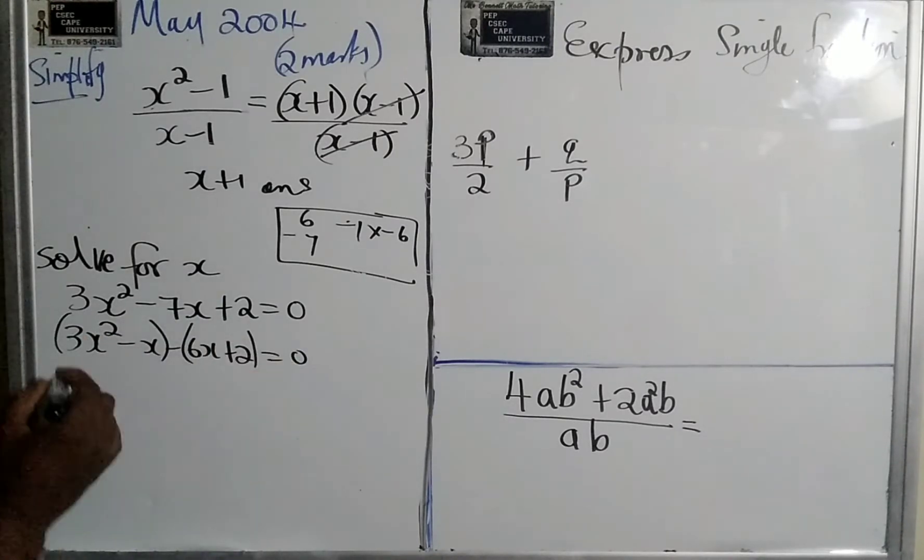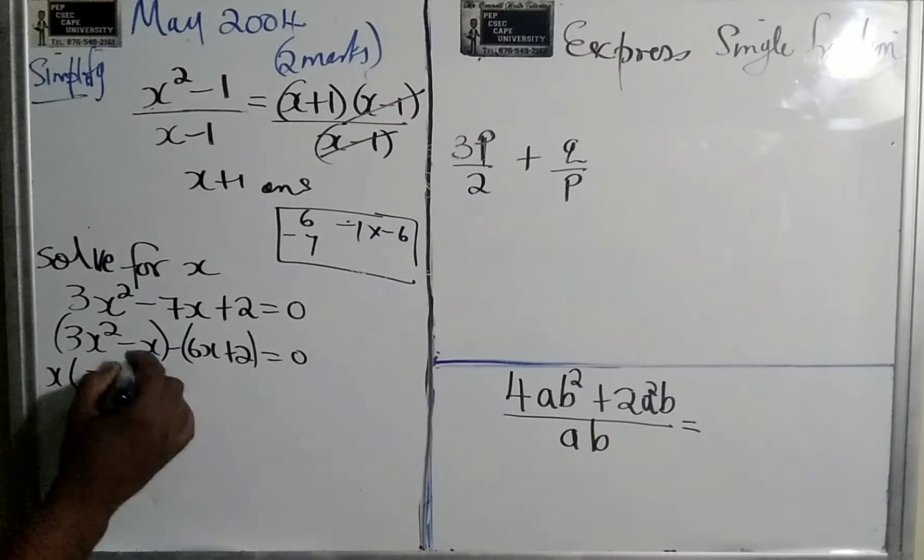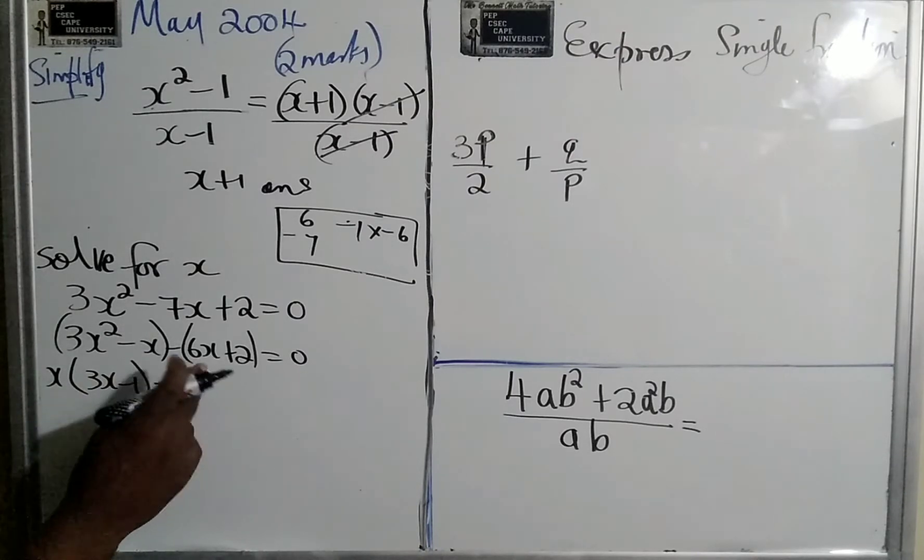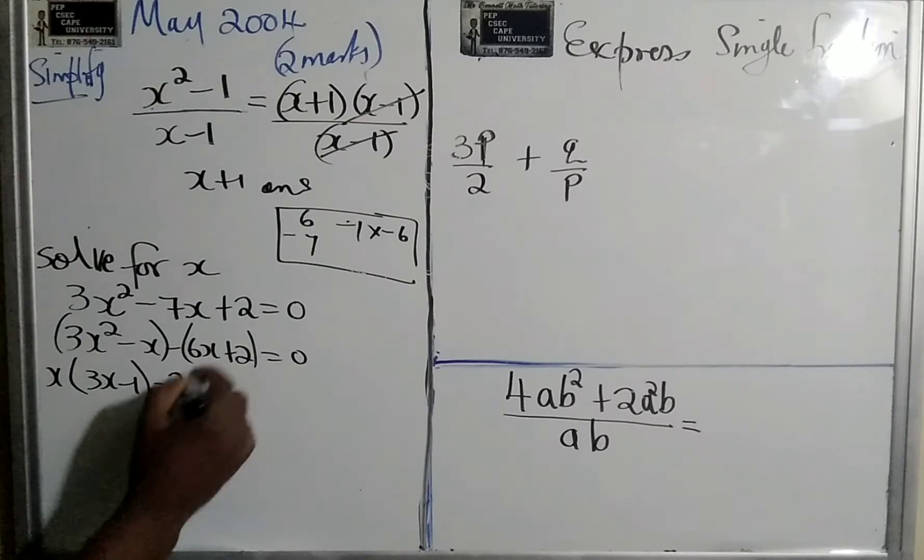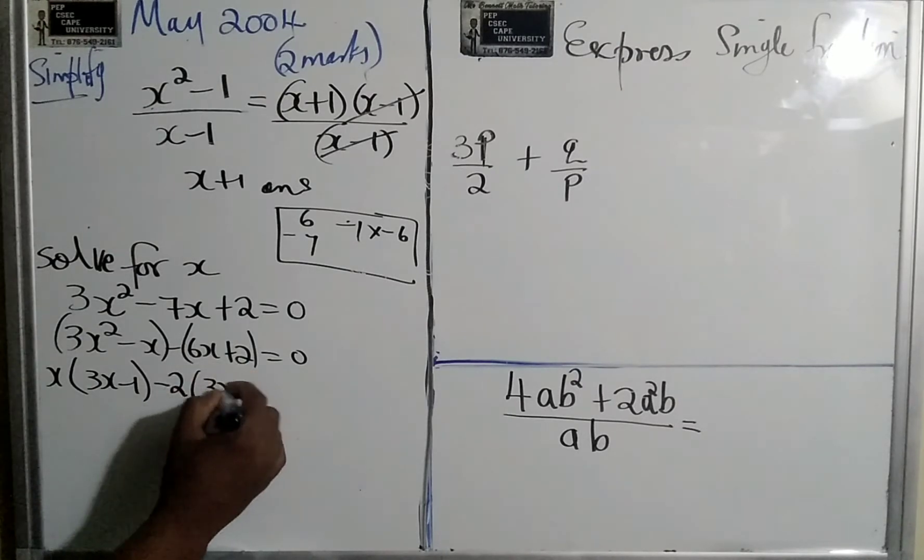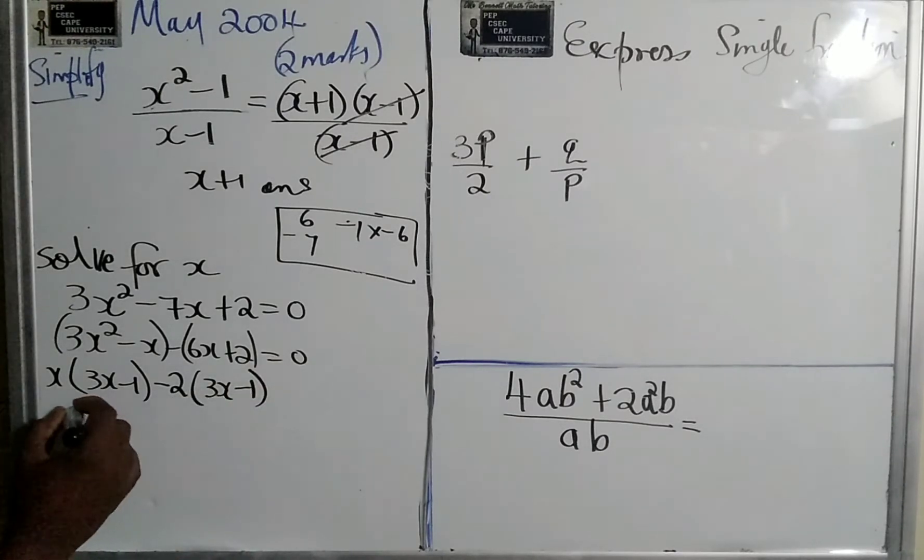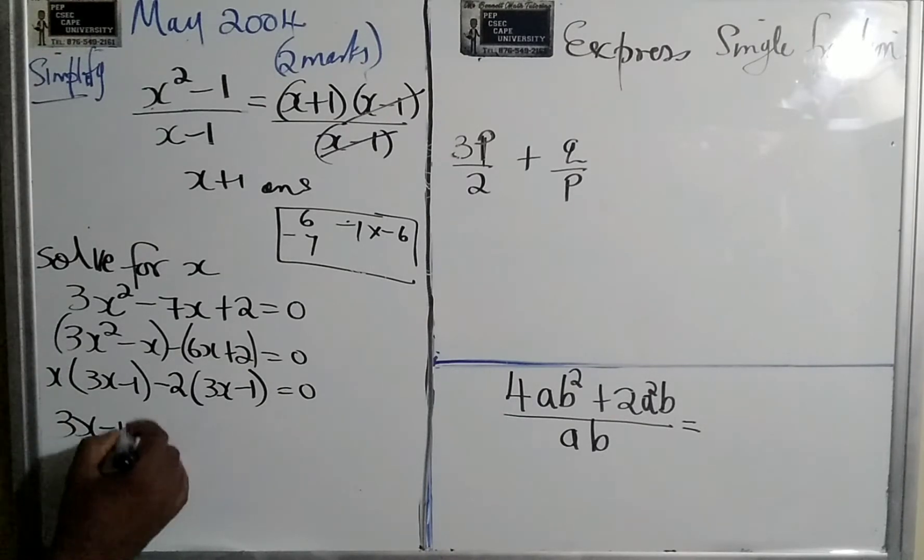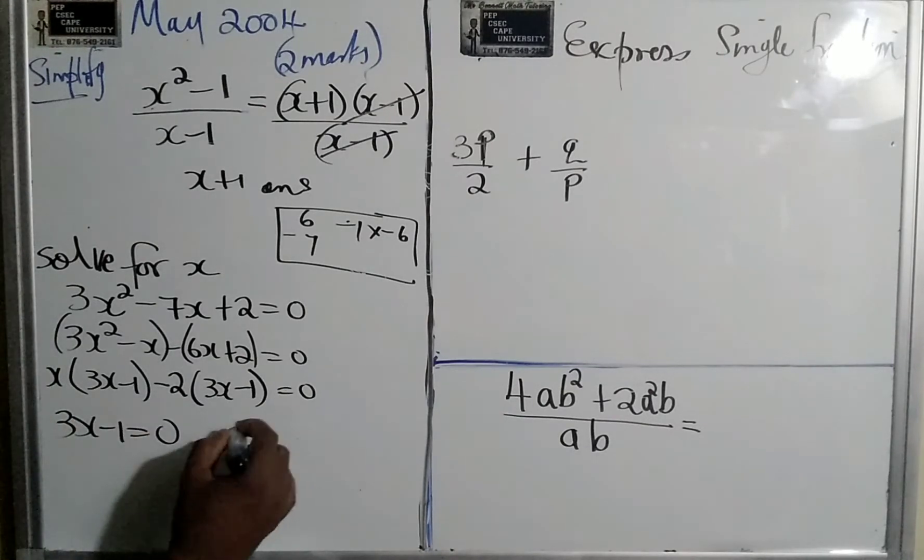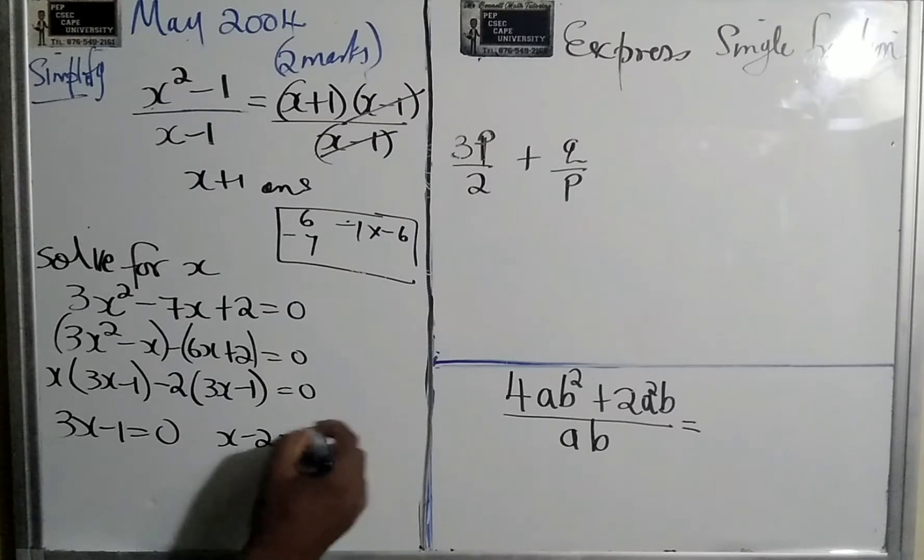We factorize this. I know everyone should be able to factorize properly. The highest common factor is x, leave 3x minus 1. Put the minus here. What's the highest common factor of 6 and 2? That's 2. 2 into this goes 3x and 2 into itself goes negative 1. So two solutions are 3x minus 1 equals 0 and x minus 2 is equal to 0.